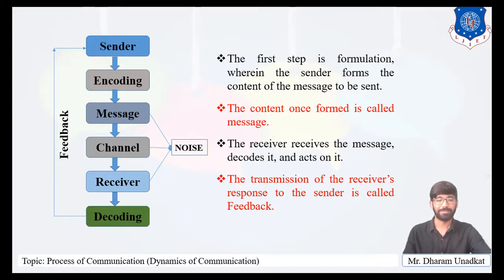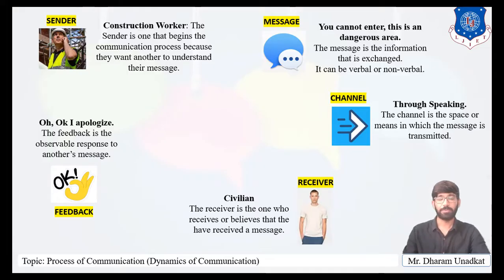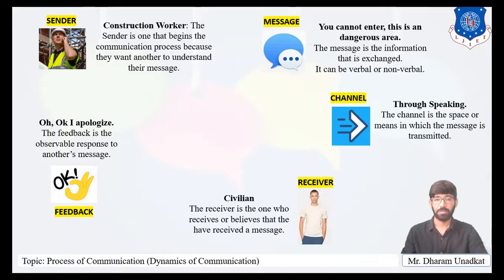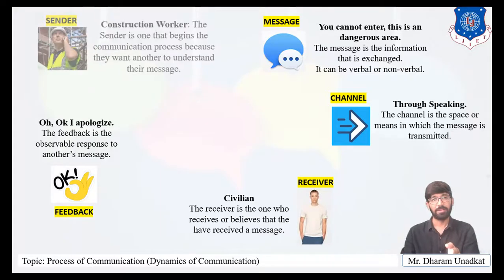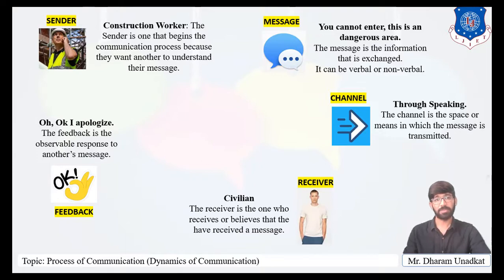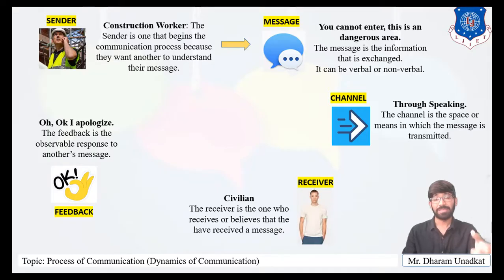Let's understand the process through an example. The communication takes place at a construction site where a construction worker is working and a civilian is entering the site without permission. The sender here is the construction worker — the one who begins the communication process because they want another to understand their message. The message the construction worker forms is: 'You cannot enter. This is a dangerous area.'